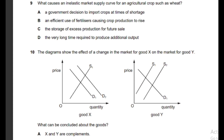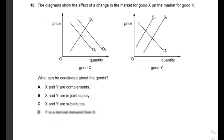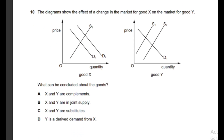Question number nine: what causes an inelastic market supply curve for an agricultural product? Option D is the correct answer: the very long time required to produce additional output. When it takes longer to produce a product, supply will be inelastic — this is the main factor affecting price elasticity of supply.